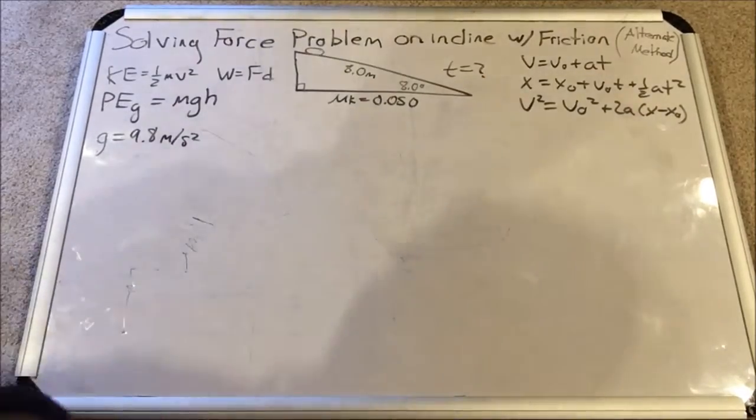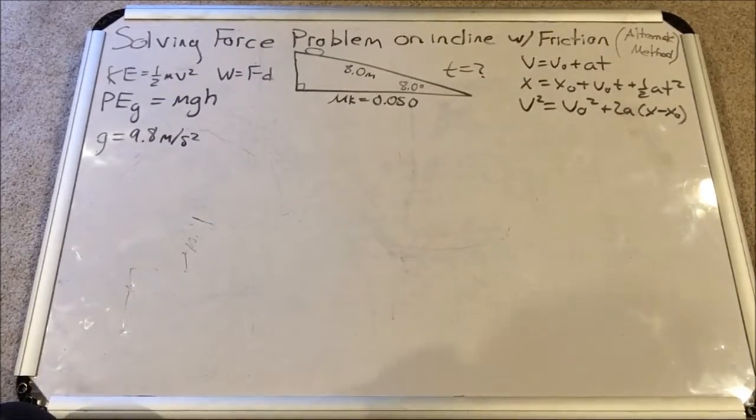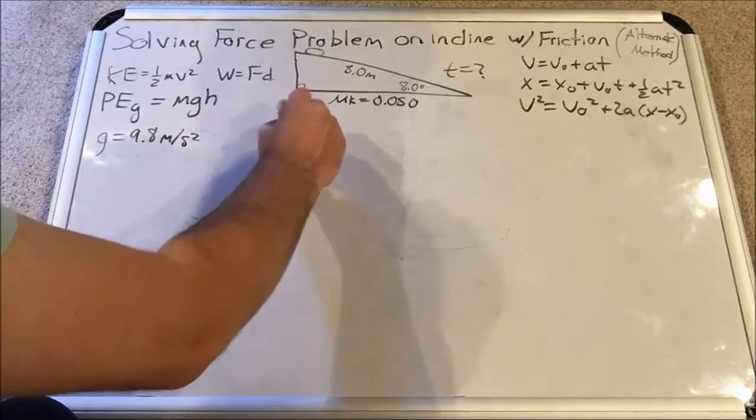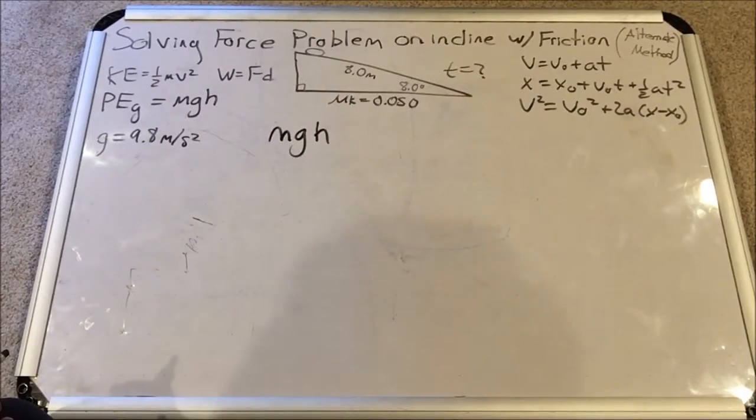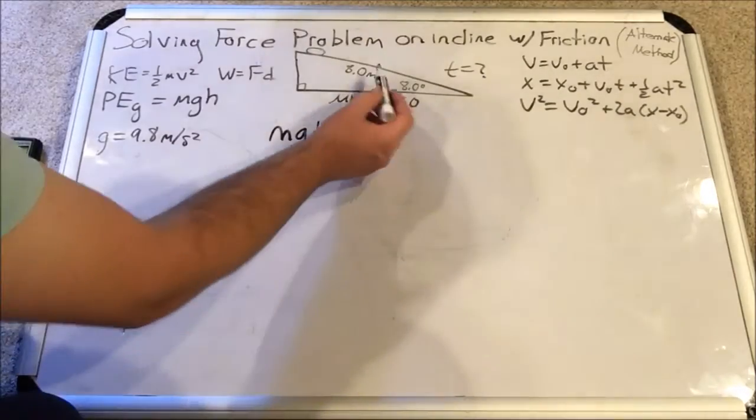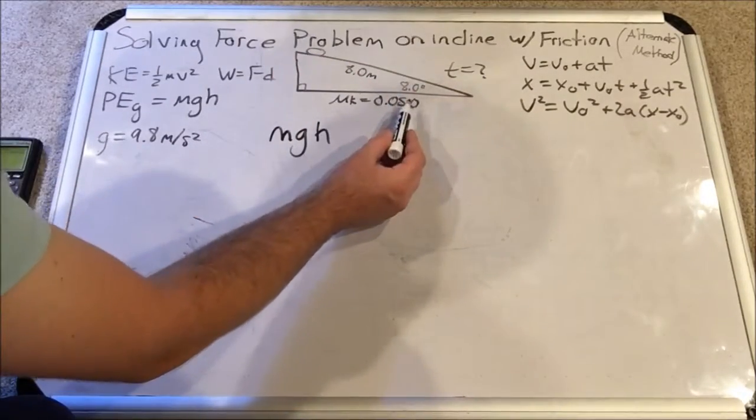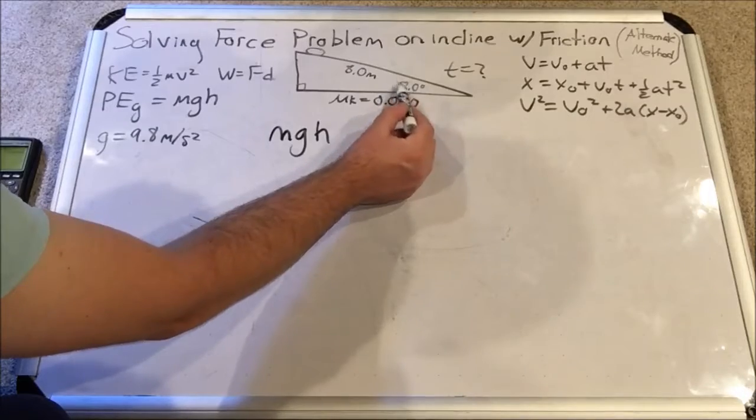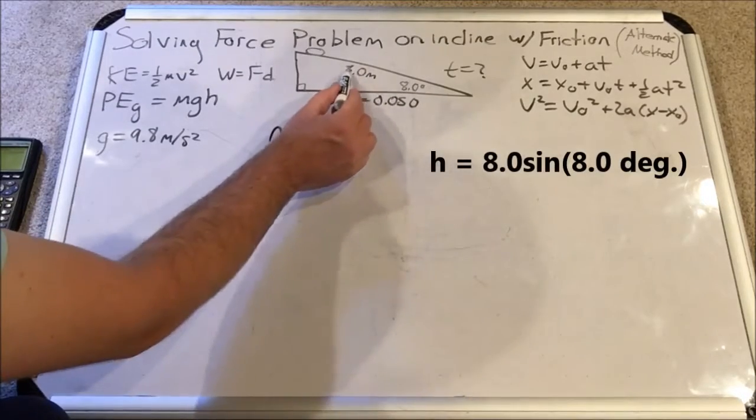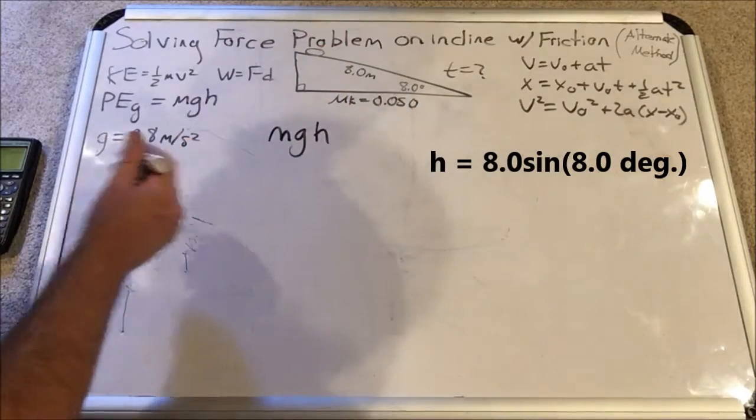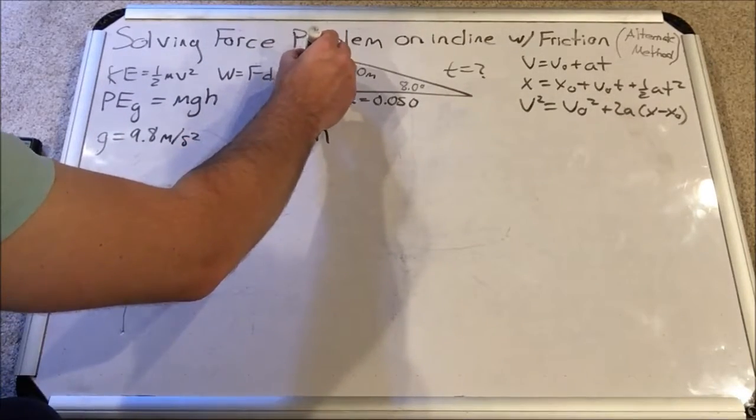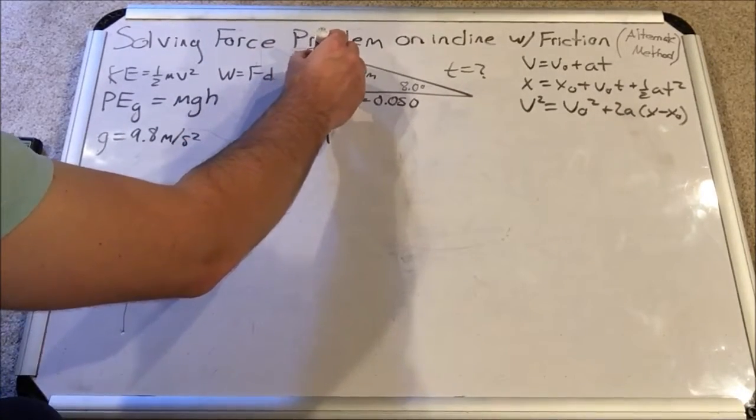Alright, so as we said, at the top of the ramp, the total energy of the system is equal to mgh. But I have to find that h value. That can be done by taking the hypotenuse of this right triangle and multiplying it by the sine of 8 degrees. So 8 meters times sine of 8 degrees will give us this length, and I've computed that. It is 1.11 meters.